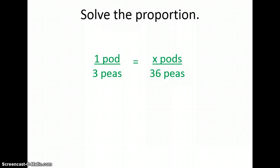With this one, I can look and see that I can multiply three times twelve to get thirty-six. So I look at the numerator and multiply one times twelve to get twelve pods to thirty-six peas. It's just like creating equivalent fractions, and we're solving proportions in the process.